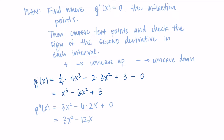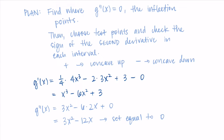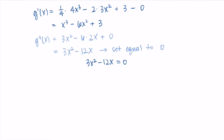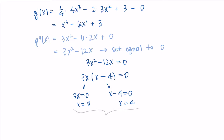I set the second derivative equal to zero: 3x² minus 12x = 0. Both terms have a 3x, so I factor that out to get 3x(x minus 4) = 0. Make sure you don't move terms over and divide — you'll lose an answer. So I get 3x = 0, meaning x = 0, or x minus 4 = 0, meaning x = 4. This example has two inflection points at x = 0 and x = 4.